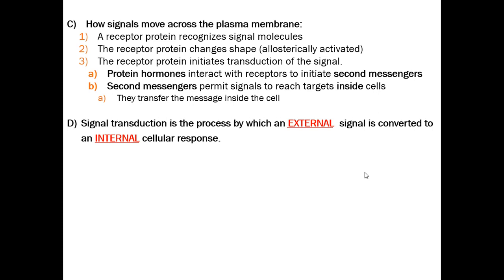In signal transduction, the external signal — the outside signal — is converted to an internal response. The signal transduction process is the process by which the external signal converts to an internal response.